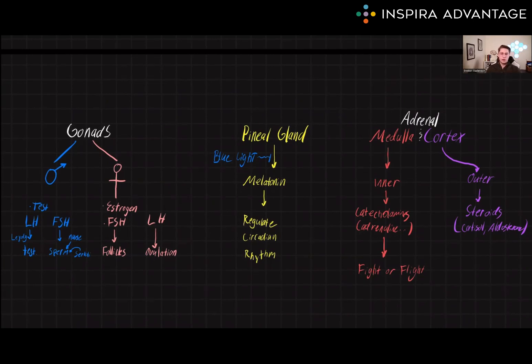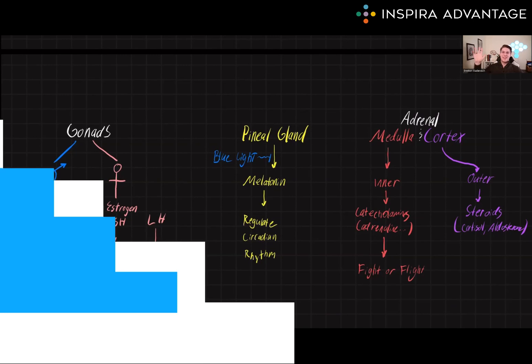In conclusion, the gonads, pineal gland, and adrenal gland are key components of the endocrine system that play an important role in maintaining homeostasis and overall health. Thank you so much for watching our video on the gonads, pineal gland, and adrenal cortex and medulla, and I'll see you next time.